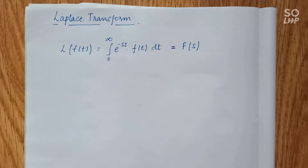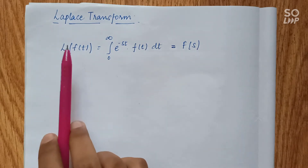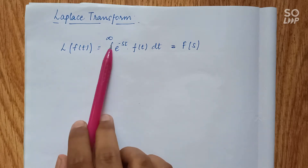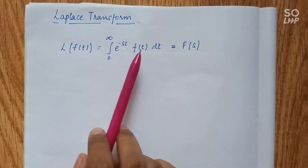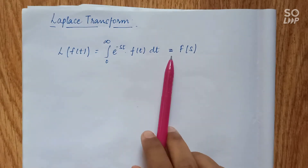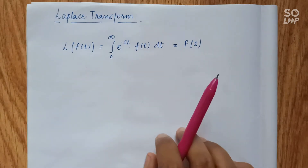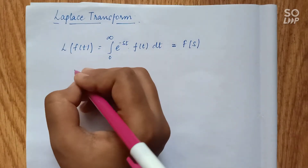I'm going to show you how to find the Laplace of a given function. The Laplace transform of a function can be described as an operation done on that function which results in a new function. If our function is f(t), the Laplace of f(t) is the integration from zero to infinity of e^(-st) times f(t) dt, which gives us a new function F in terms of s, where s is a constant.